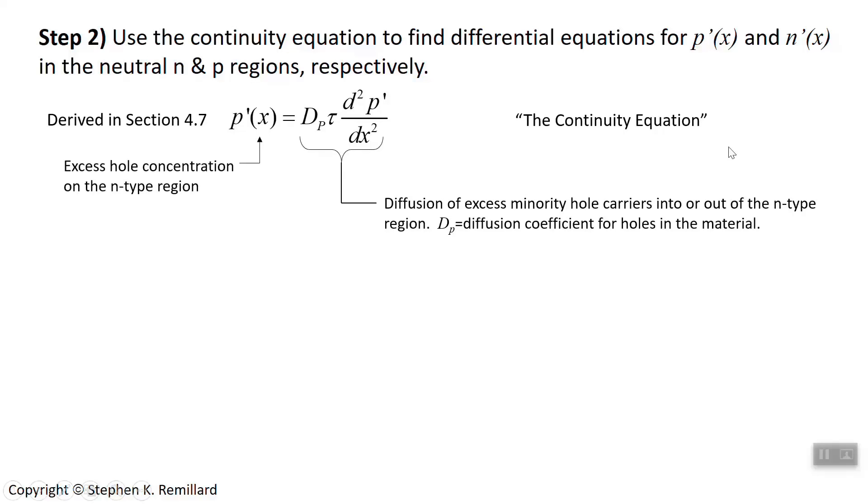So you have the excess hole concentration, and then there's a version also for excess electron concentration. You just switch out the P's and N's. And that equals,